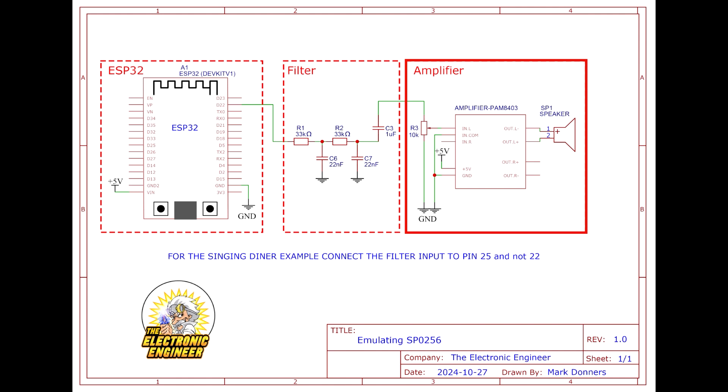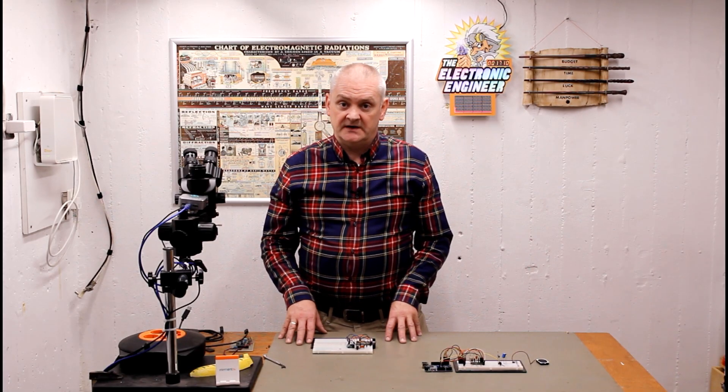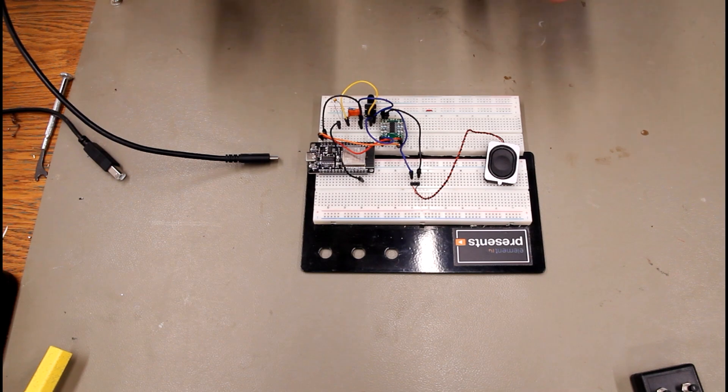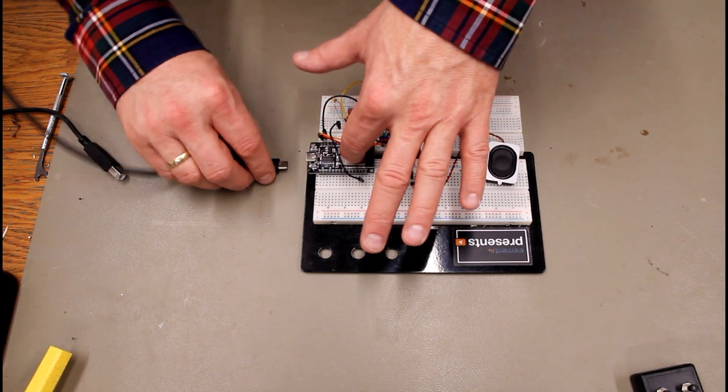However, you can also use the audio amplifier we used in a previous setup with the LM386. Here's a hint for later. If you're going to experiment with the singing version, then you need to change the filter input by connecting it to a different output of the ESP32. Change pin 22 to pin 25. Of course, you need to install a library. And I will show you exactly how that is done. First thing you need to do is program it. For that we plug it in.